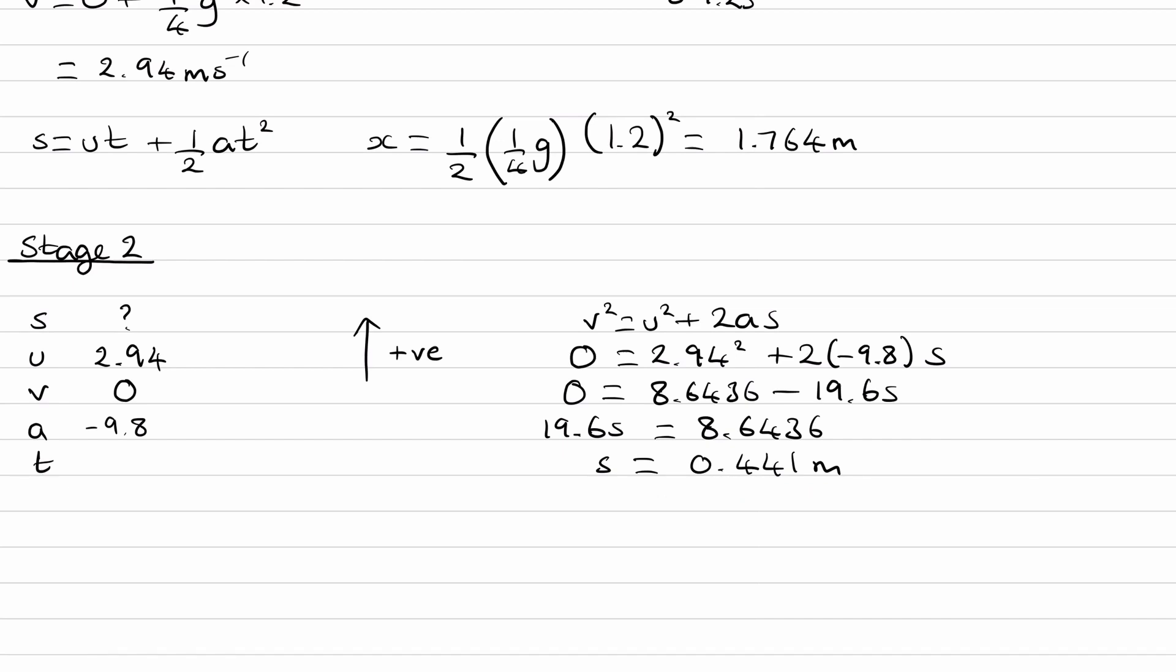So the total distance of B above the ground would be 2X plus S, 2 lots of 1.764 plus 0.441. And that will be 3.969 meters. Which is our final answer.